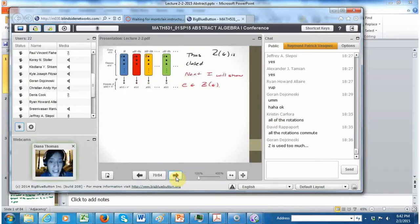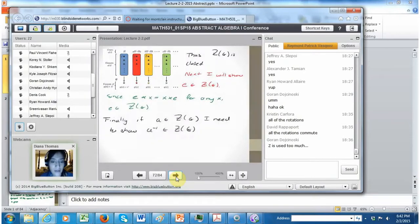Now I have to show the identity is in there. Well, the identity commutes with everything, so the identity is in there. Finally, I have to show... that wasn't too hard. I guess we could have just shown the inverses were in there, and then we're done. But let's... It's nice to write one line that's one line.